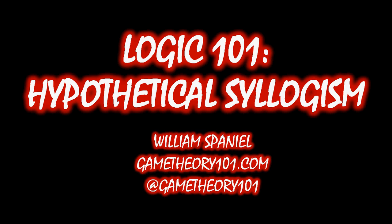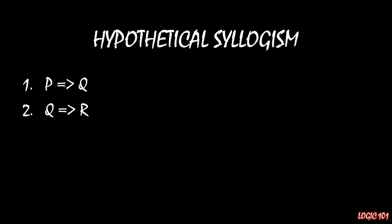Hypothetical syllogism has two premises: P implies Q and Q implies R. If we have those two things, we can conclude a third thing — P implies R. Essentially we're taking the first element and the third element, removing the middleman, and putting together a new implication that has the first and the third.